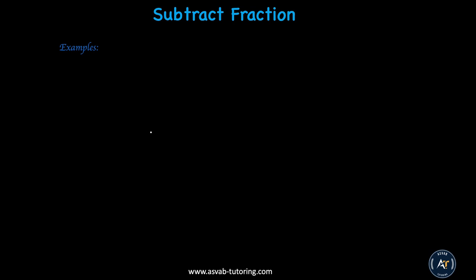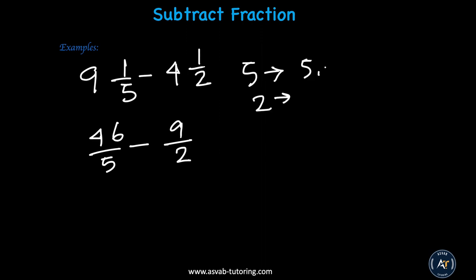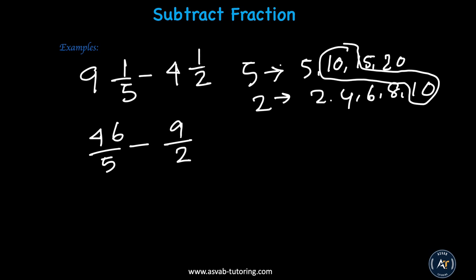Now we'll learn how to subtract fractions — it's exactly the same process as addition. Take 9 and 1 fifth minus 4 and 1 half. Convert to improper fractions: 9 times 5 is 45, plus 1 is 46 over 5. Then 4 times 2 is 8, plus 1 is 9 over 2. Find the common denominator using the multiplication tables for 5 and 2: 5, 10, 15, 20 and 2, 4, 6, 8, 10 — so 10 is the smallest common denominator.